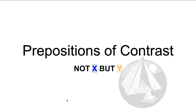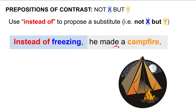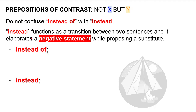Let's look at prepositions of contrast — that is, not X but Y. Use instead of to propose a substitute, meaning not X but Y. For example, instead of freezing, he made a campfire — that is, not freezing but campfire. Please remember not to confuse instead of with instead. Instead of is a preposition, while instead functions as a transition between two sentences and elaborates a negative statement while proposing a substitute.